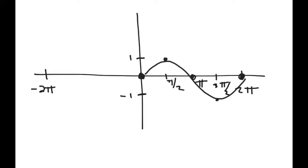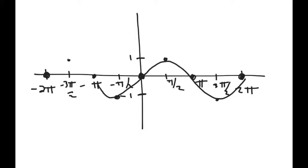If one period is 2pi, then it's going to go to negative 2pi on the other side. Sine hits the x-axis at every 1pi, whether positive or negative. At negative pi over 2, it's going to hit its minimum of negative 1, and at negative 3pi over 2 it's going to hit its maximum of 1, because you have to follow the pattern of the curve.